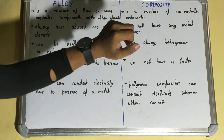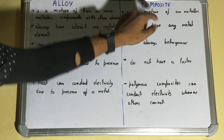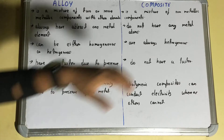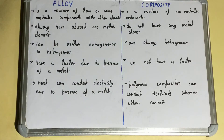But if we talk about the composite, it is a mixture of non-metallic components. When only non-metallic components are mixed together, they are called a composite. That is the basic difference.